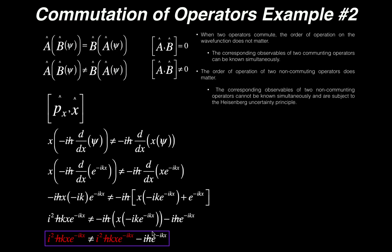There is no way to simplify the right side to match the left side, because the right side contains the extra term minus i h-bar e to the minus i k x that does not appear on the left. Therefore, mathematically speaking, you do not get the same result on both sides, which means the position operator and the momentum operator in the x direction do not commute. On a simpler level, this means you cannot know position and momentum simultaneously — which is precisely the Heisenberg uncertainty principle. This example is the mathematical proof of why position and momentum cannot be known simultaneously.